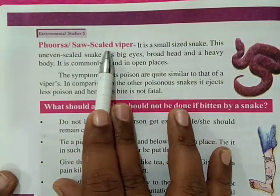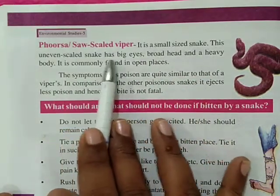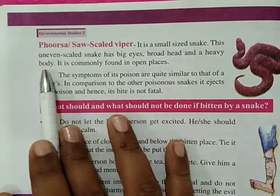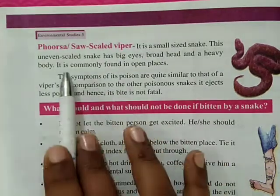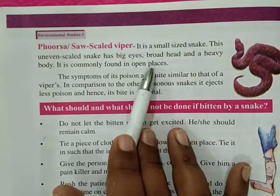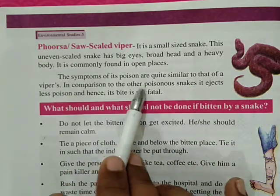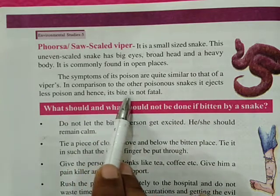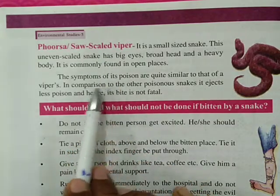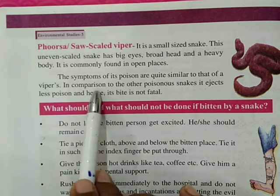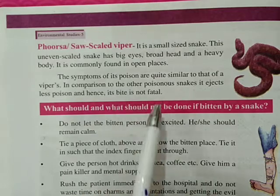Next — saw-scaled viper. It is a small-sized snake — bahut hi chhote aakar ka snake hota hai. This uneven-scaled snake has big eyes, a broad head, and a heavy body. It is commonly found in open places. The symptoms of its poison are quite similar to that of a viper. In comparison to the other poisonous snakes, it injects less poison and hence its bite is not fatal — iska bhi symptoms wiper jaisa hi hota hai, but thoda sa difference yeh hai ki yeh jo poison inject karta hai, jiski wajah se marne ki kisam hone ki sambhavna kam hoti hai.